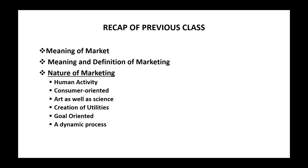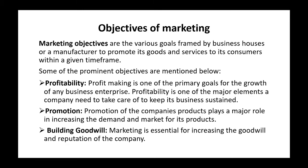Let us see the recap of the previous class. In the previous class, we learned the meaning and definition of marketing, and the nature of marketing. There are six aspects: human activity, consumer oriented, art as well as science, creation of utilities, goal oriented, and it is a dynamic process.